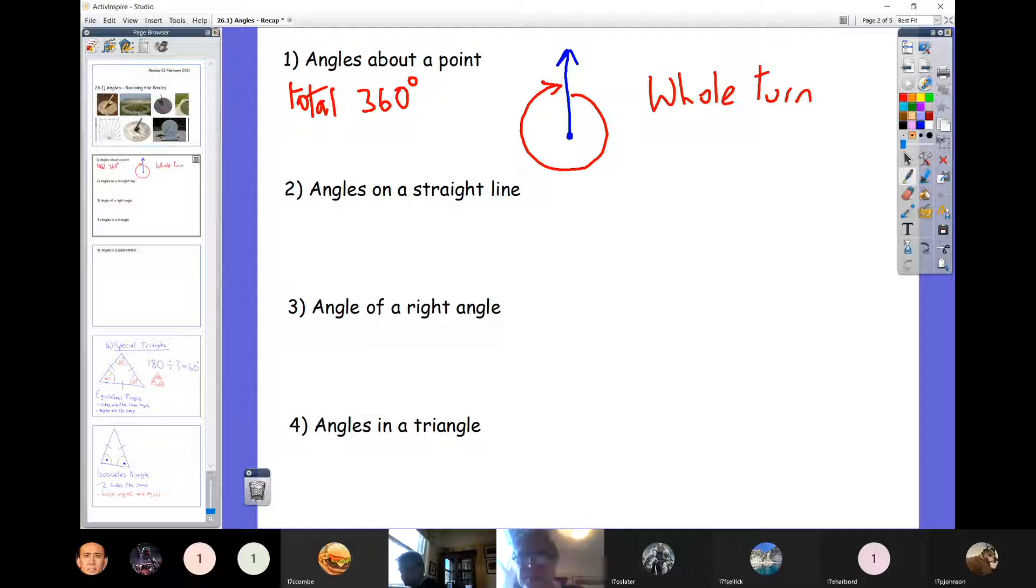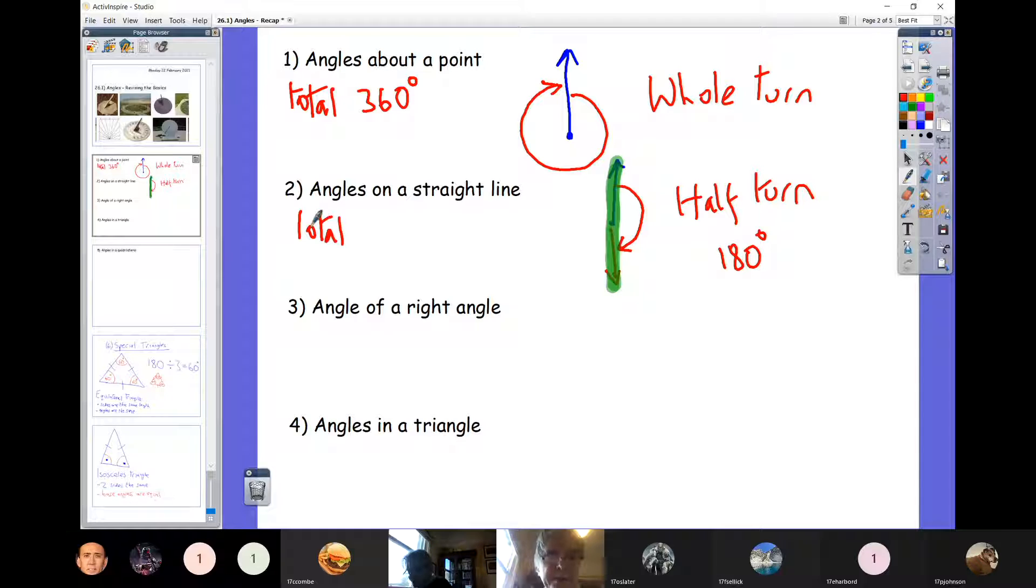So that is a whole turn. If you turn all the way around and you're facing where you started, that's 360 degrees. Now, what about a half turn then? We're starting facing upwards. We turn round halfway round, so we're then facing downwards. That is obviously a half turn. And our half turn is creating a straight line. You can see going from that 12 o'clock to six o'clock, we've generated a straight line. So that half turn is 180 degrees. And we can say angles on a straight line total 180 degrees.